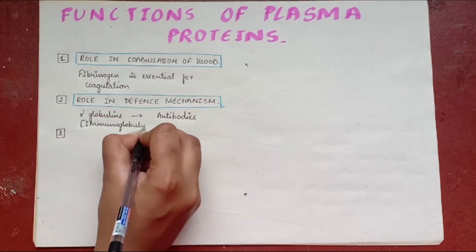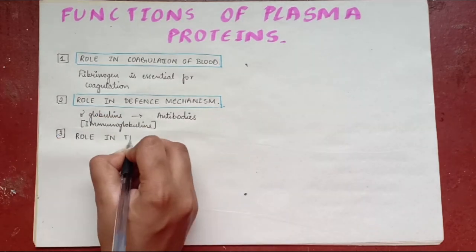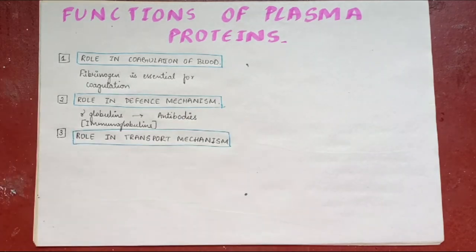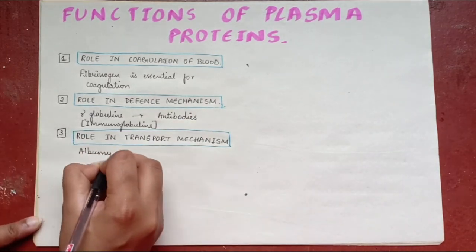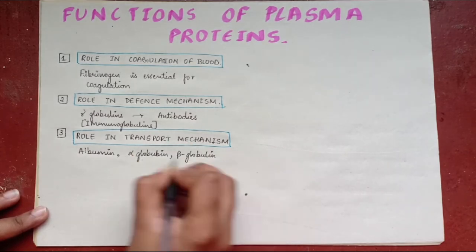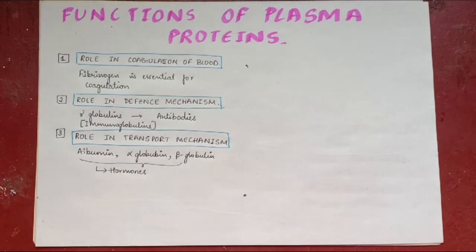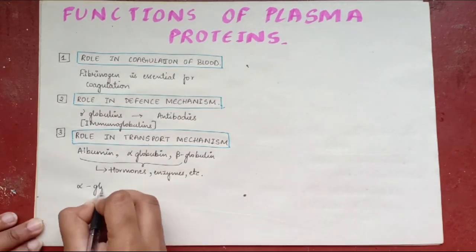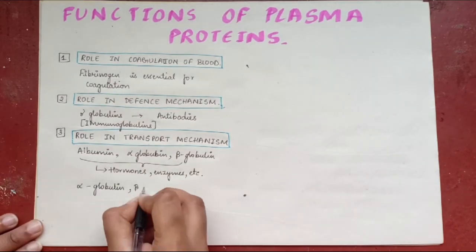Role in transport mechanism. Plasma proteins are essential for transport of various substances in the blood. Albumin, alpha-albumin, and beta-globulin are responsible for transport of hormones, enzymes, etc. The alpha and beta-globulin play an important role in the transport of metals in the blood.